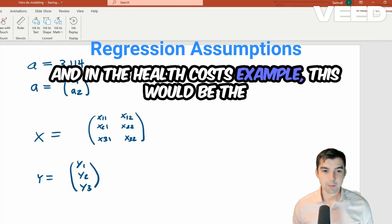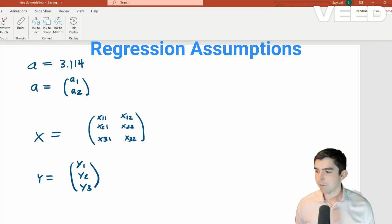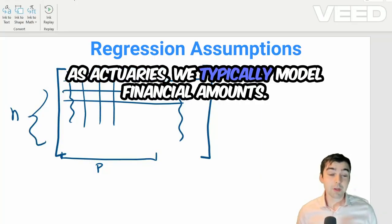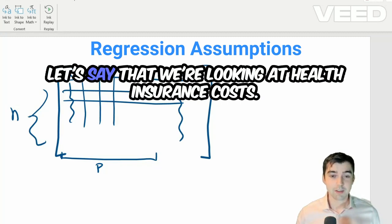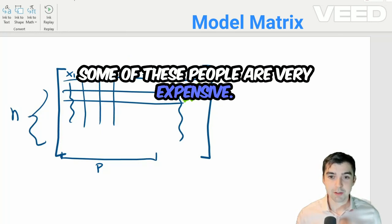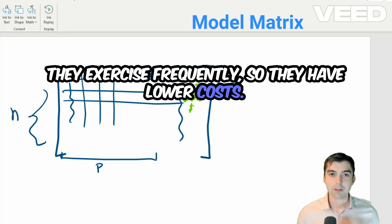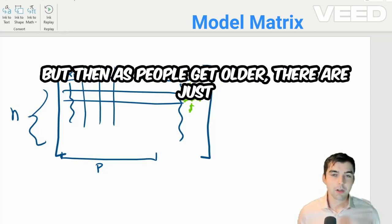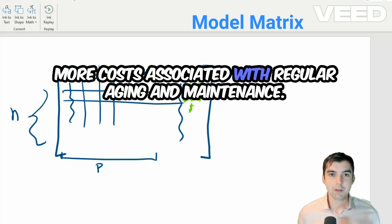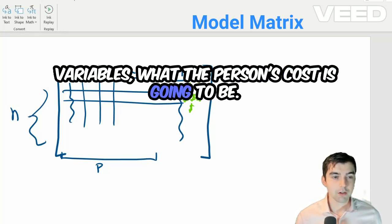And in the health costs example, this would be the cost of the first patient, the cost of the second patient, and the cost of the third patient. As actuaries, we typically model financial amounts. Let's say that we're looking at health insurance costs. Each of these rows is a person. Some of these people are very expensive. Others are younger, they exercise frequently, so they have lower costs. But then as people get older, there are just more costs associated with regular aging and maintenance. And so we want to know, based on several variables, what the person's cost is going to be.